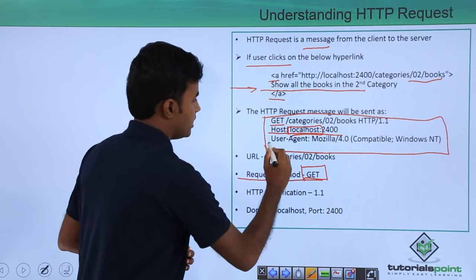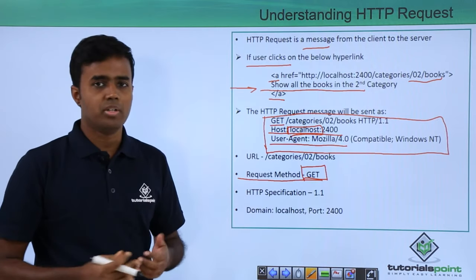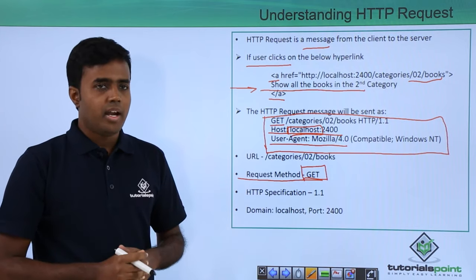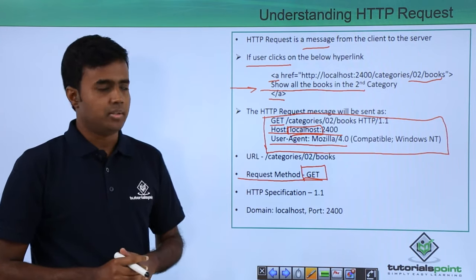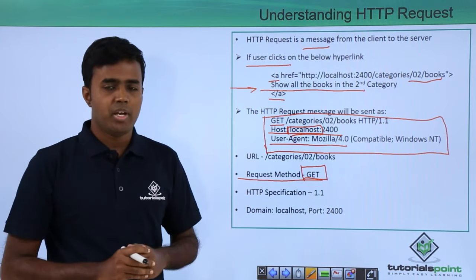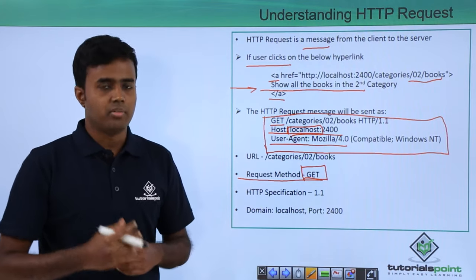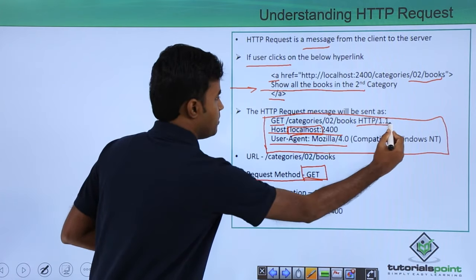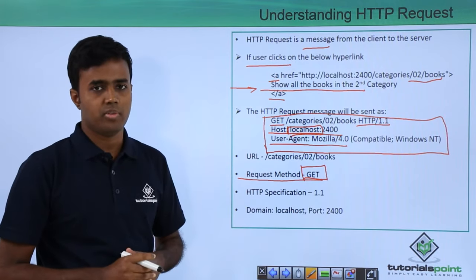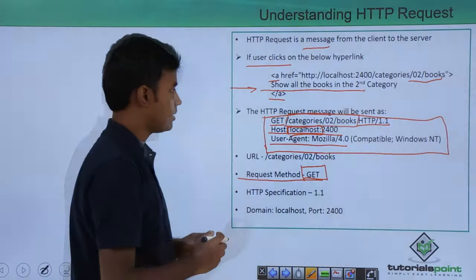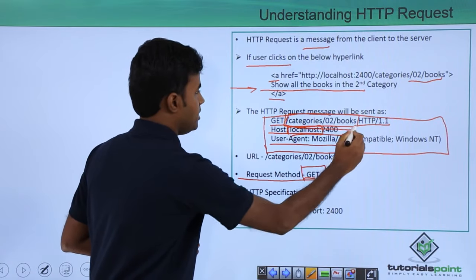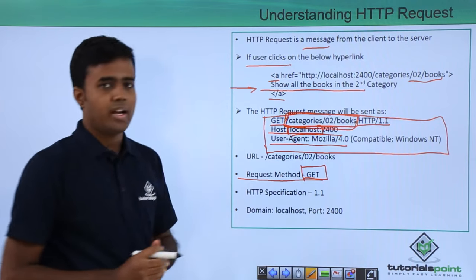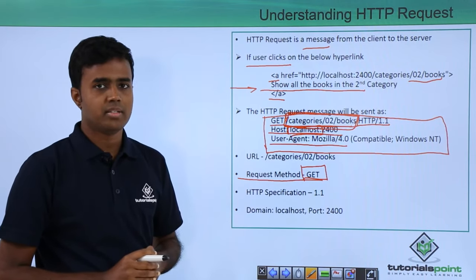The third thing is the user agent. It gives information about the operating system and the browser that the client is using. These give additional information to the server before processing your request. It also gives information about the HTTP specification being used, which is 1.1 currently. And this is the URL we are talking about — this is the relative URL and the request gets sent to this particular URL.